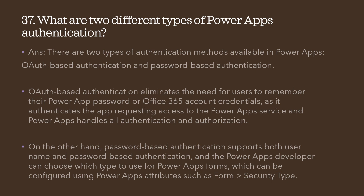Question 37: what are the two types of Power Apps authentication? There are two types: OAuth-based authentication and password-based authentication. OAuth-based authentication eliminates the need for users to remember their Power Apps or Office 365 credentials, as the app requests access to the Power Apps service and Power Apps handles all authentication and authorization. Password-based authentication supports both username and password credentials, and the Power Apps developer can choose which type to use, configured via Power Apps attributes such as form security settings.